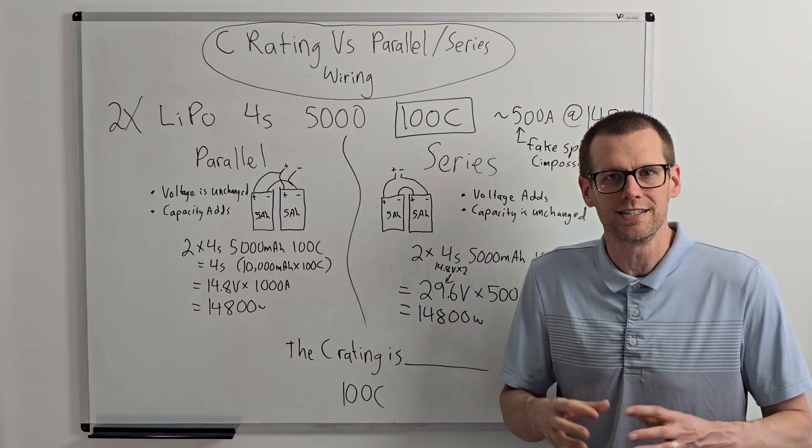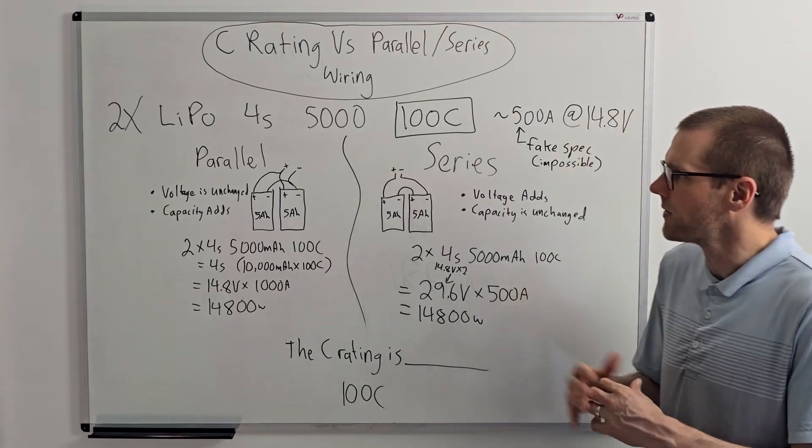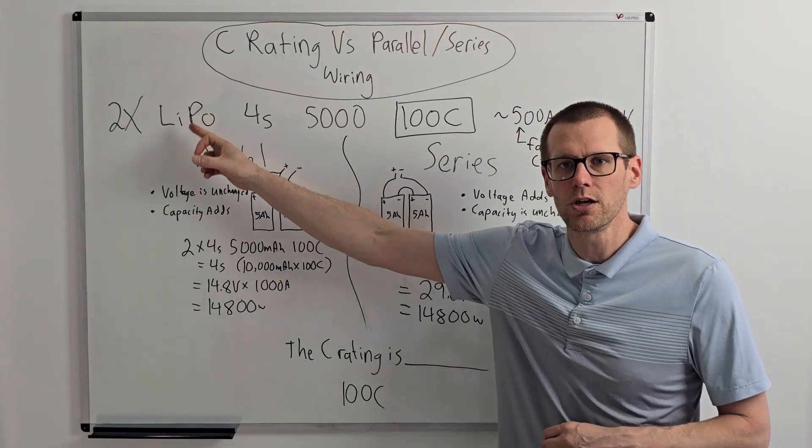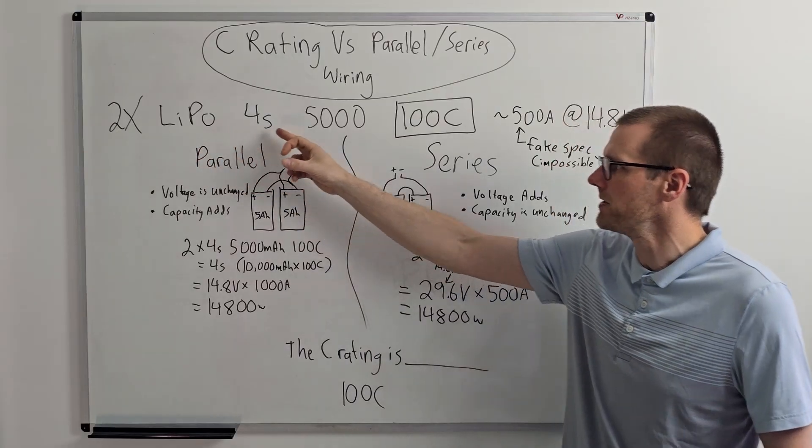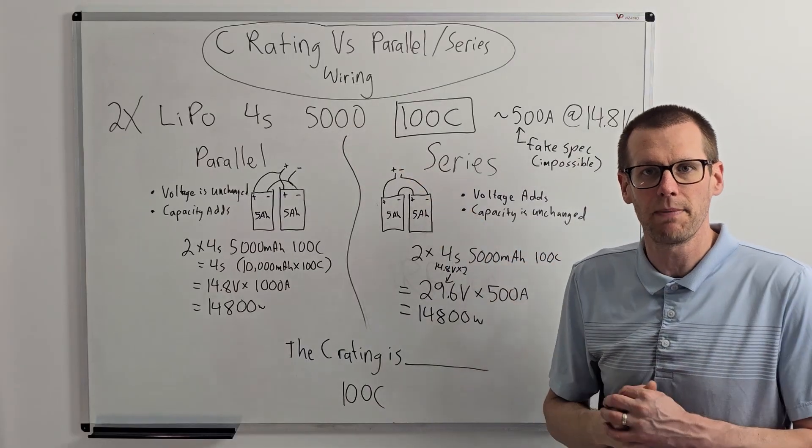Let's get started and take a look at the example battery pack that we're going to be using here in the video today. What I have here is we're going to use two lithium polymer battery packs and they are going to be of a 4S configuration at a capacity of 5,000 milliamp hour.